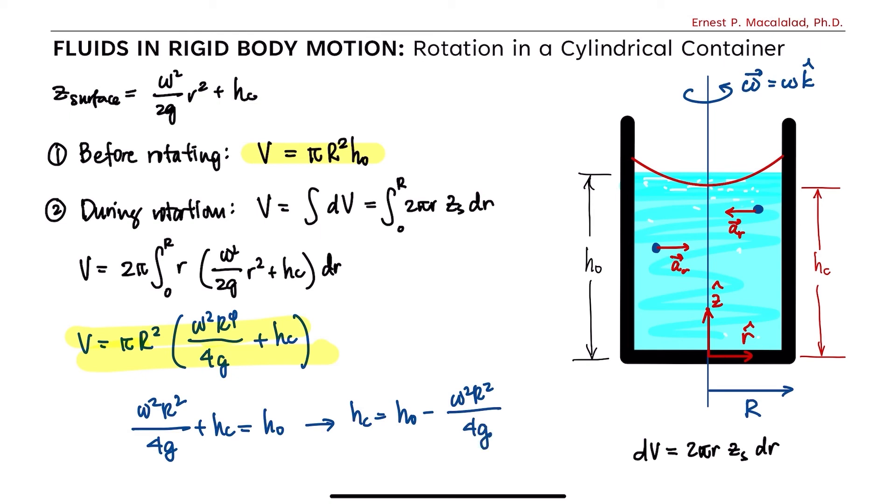So therefore, the equation of the surface is now given as z surface equals h0 plus omega squared over 2g times r squared minus r squared over 2.